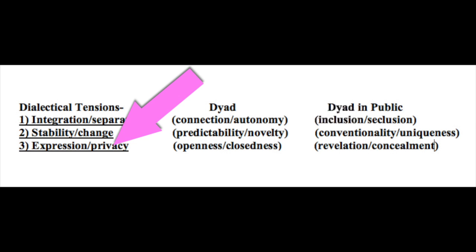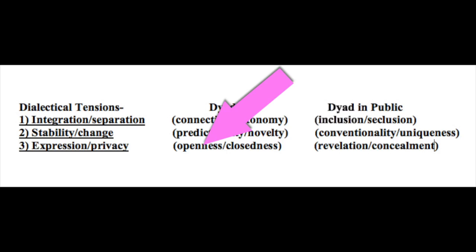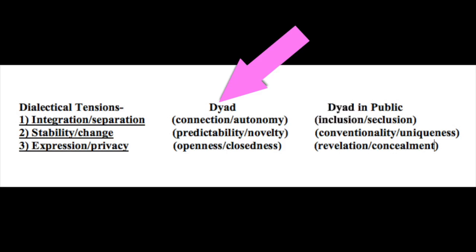The third dialectical tension is expression and privacy — how much you reveal and how much you don't reveal. In the privacy of your own home, this is how much information you reveal about your day. You come home from work and tell your partner everything — how you felt, the sandwich you ate, how many times you went to the bathroom — that would be extreme openness. If it was closeness, your partner would ask how work was and you'd just give a nod and keep moving. This tension exists just between you two in the privacy of your home.